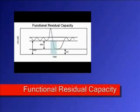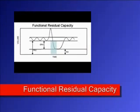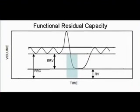The functional residual capacity is the amount of gas remaining in the lungs after a tidal expiration. It includes the expiratory reserve volume and the residual volume. Normally it is forty percent of the total lung capacity. The FRC cannot be measured with spirometry because the RV cannot be exhaled and therefore cannot be measured directly. The FRC has to be measured indirectly using helium dilution, nitrogen washout, or body plethysmography.